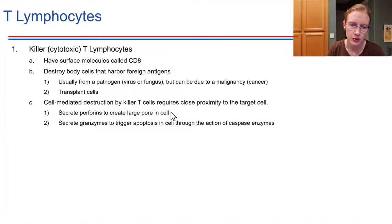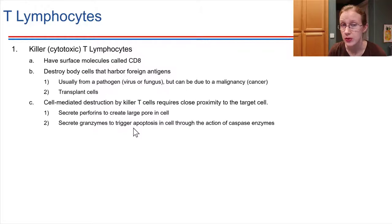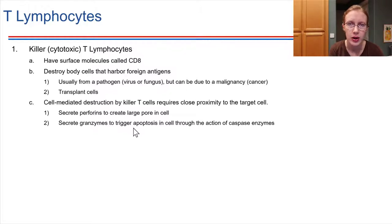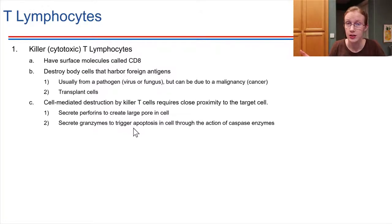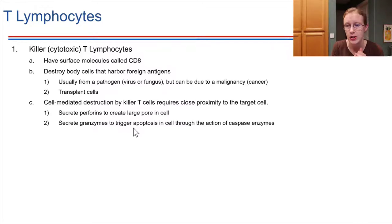The other thing cytotoxic T cells can do, other than making pores, is secrete substances that induce apoptosis in the target cell — programmed cell death. This is a very neat and tidy way to get rid of cells, because rather than bursting open and spewing their contents, the cells self-destruct from the inside and everything is kept contained inside the plasma membrane. Then a macrophage eventually comes and gobbles up the leftovers.